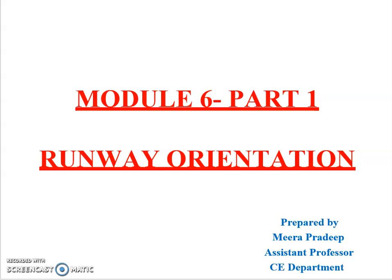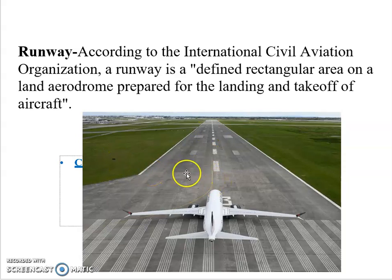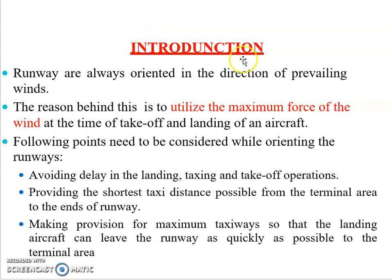Welcome to transportation engineering video lectures, module 6 part 1. Let's start with runway orientation. According to the International Civil Aviation Organization, a runway is defined as a rectangular area on land prepared for landing and taking off of aircraft. I have explained this in module 5, and for better understanding, I have placed a picture of the runway. You can see a plane taking off from the runway.